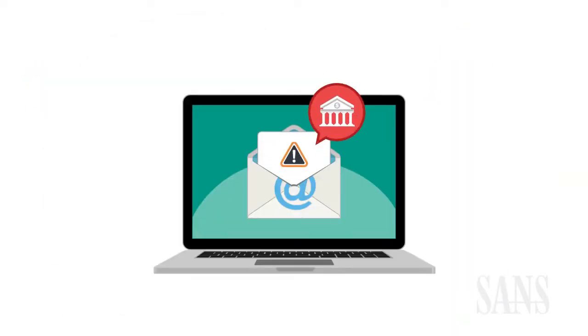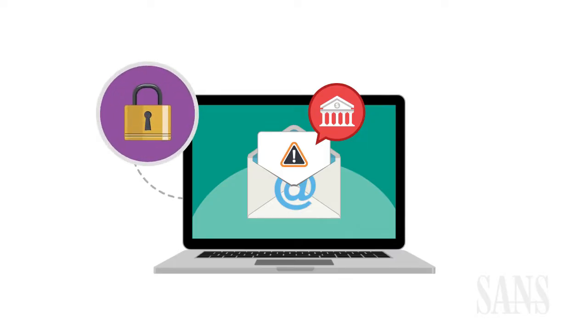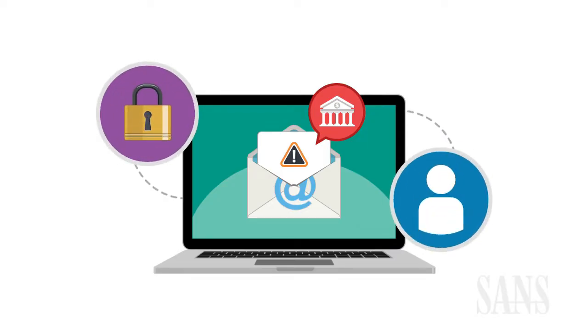Let's say you get an urgent message from your bank. Your account has expired and is about to be locked, so you have to update your account information. You call the number in the message, and an automated system asks you to answer some questions to prove your identity. Pretty straightforward, right? Unfortunately, the message wasn't really from your bank. The system was set up by criminals to record your information.